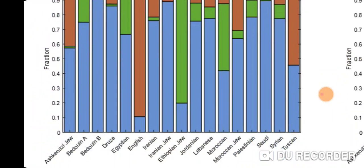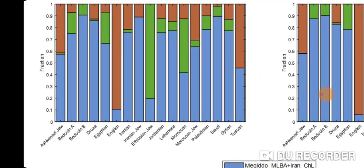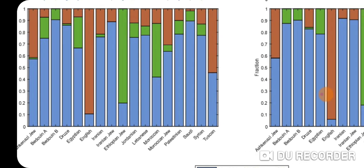As you can see, there's Ashkenazi Jew with the 41 percent European component, and a sizable Levant Middle Eastern component. Then there's Bedouin A, Bedouin B, Druze, Egyptian, English — obviously mostly European — Iranian, Iranian Jew, Ethiopian Jew with the 80 percent East African component and minor Levant component, Jordanian, Lebanese, Moroccan, Moroccan Jew, Palestinian, Saudi, Syrian, and Tuscan — a little more Levant and a little less European compared to English.